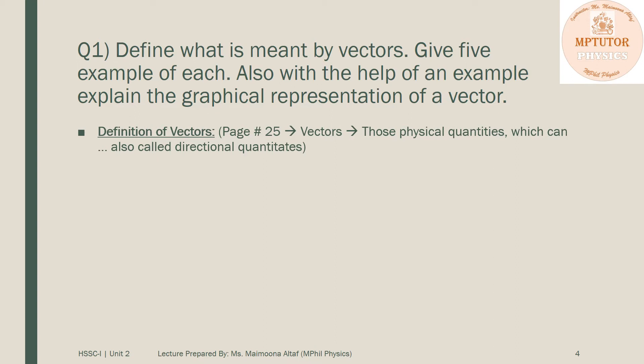After that, you have to write examples of vectors. Five examples are given in your book. You can also write other examples of vectors if you want. And then, the third step is to explain the graphical representation of a vector with the help of an example.